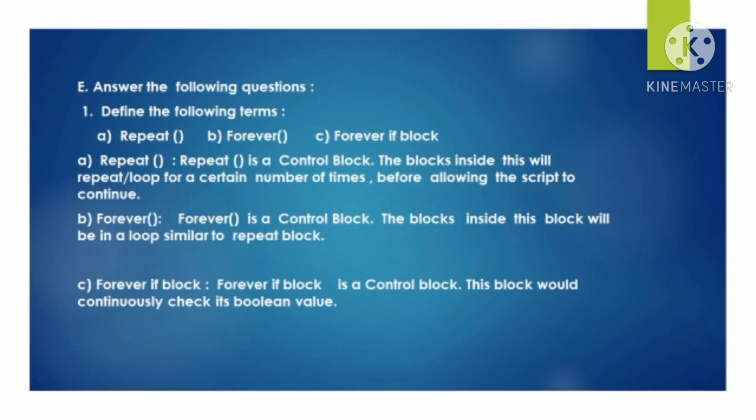The next slide contains some questions and answers. Question number E: Answer the following questions. Number 1: Define the following terms. Number A: Repeat block. Number B: Forever. Number C: Forever if block. Answer A — Repeat: Repeat block is a control block. The block inside this will repeat or loop for a certain number of times before allowing the script to continue.